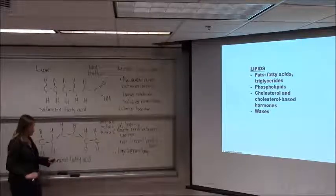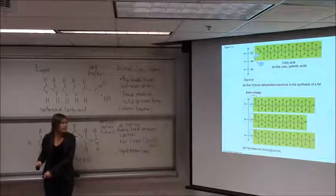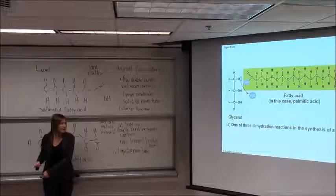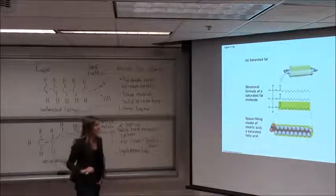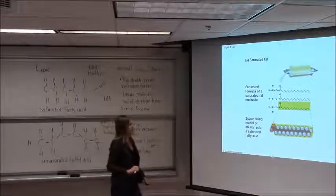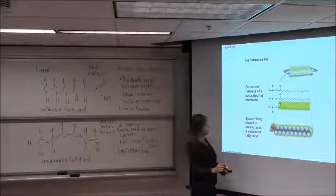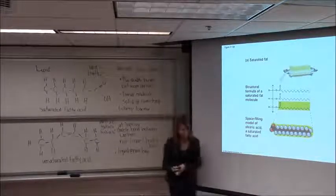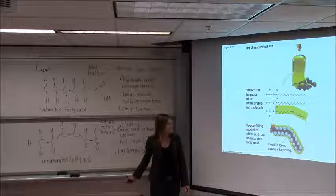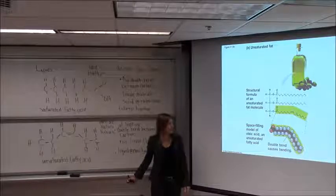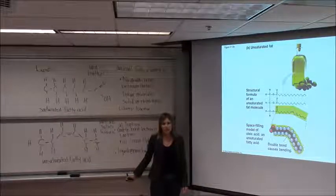Let's quickly look at the picture. That's a triglyceride — we're going to come back to that in a minute. This would be the saturated fat, which is very linear and those can clump together, and then this would be the bend in the unsaturated fat.